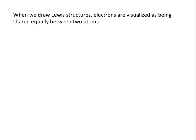When we draw Lewis structures, we draw the bonded electrons as a line between two atoms, and these electrons are visualized as being shared equally between those two atoms. But most of the time, electrons are not shared equally between two atoms.